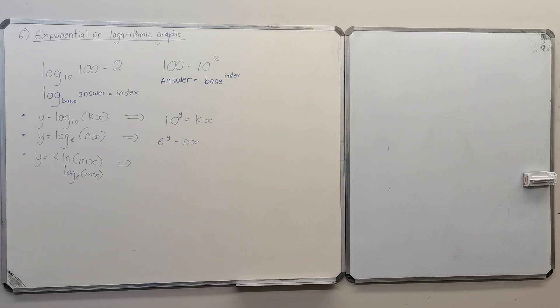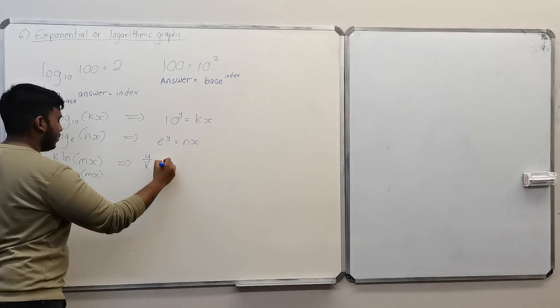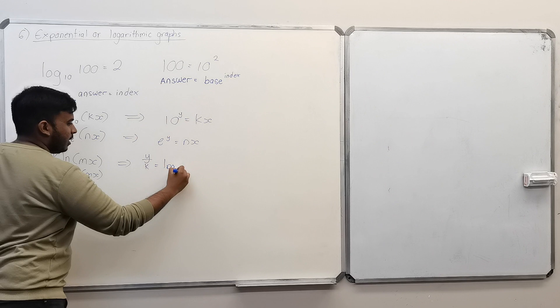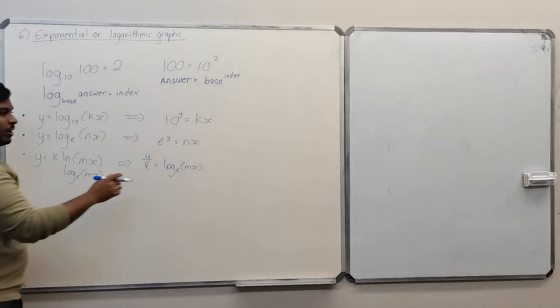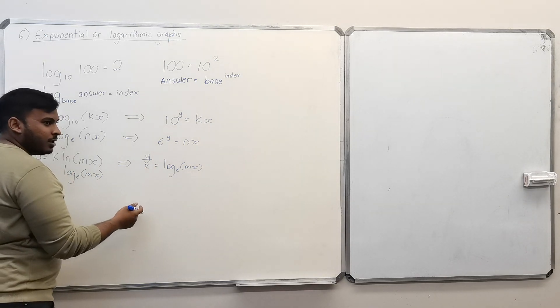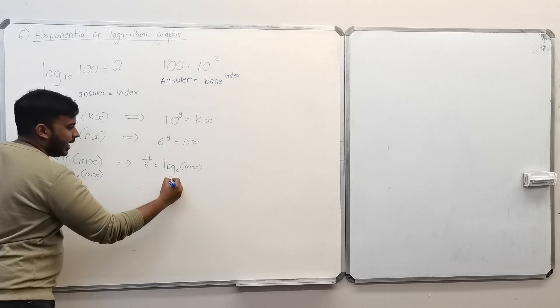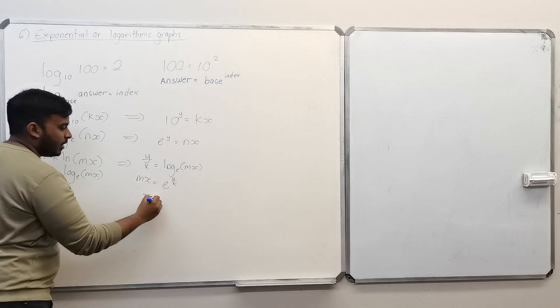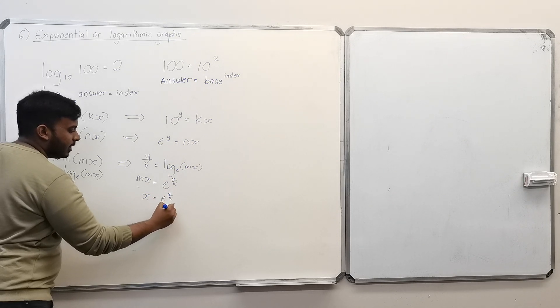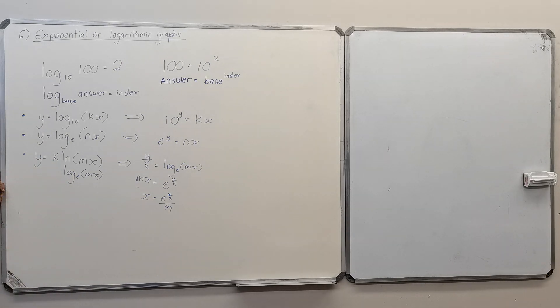If you had to convert that into an exponential form, it would be y/k = ln(mx), which is log_e(mx). So if you convert it now to exponential form, it would be e^(y/k) = mx. And if you make x the subject of the formula, it would be e^(y/k) over m. So that would be the exponential form of that.